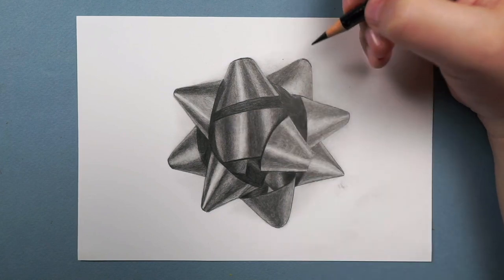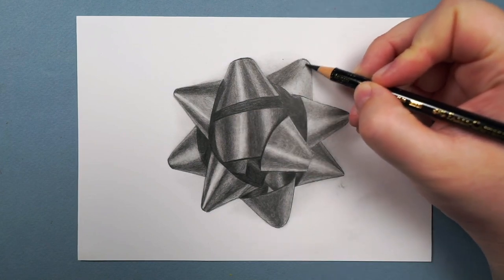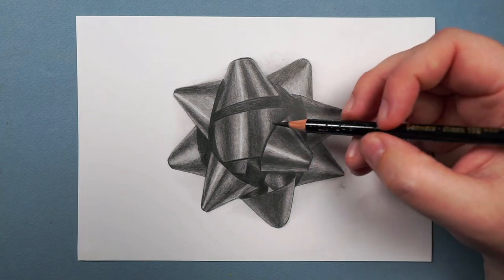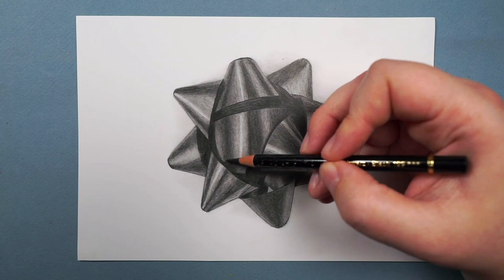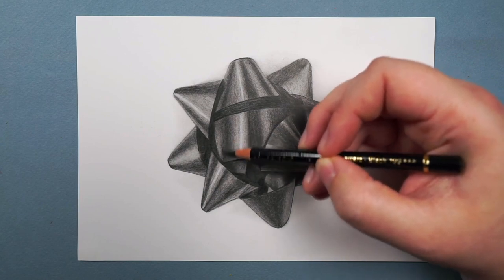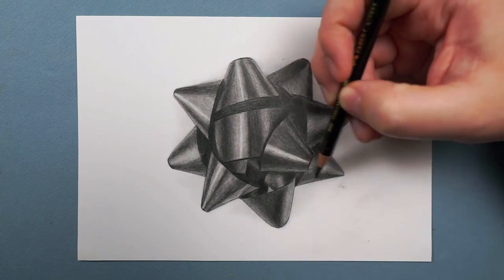But it is at least an option with the 5B pencil. The Polychromos just won't blend in the same way. Once I've gone over the whole thing with the Polychromos pencil and really made some of those darker areas as dark as in the reference photo, that is it.